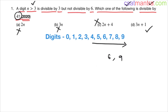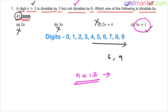Let's say you don't know the difference between digit and number, and you took n as 15 — because 15 is divisible by 3 but not divisible by 6, so it follows the condition. Then 3n+1 = 3×15+1 = 46, which is not divisible by 4. Aspirants do make this mistake — they may go with 9, they may go with 15. That's why it is important to know the difference between digits and numbers.